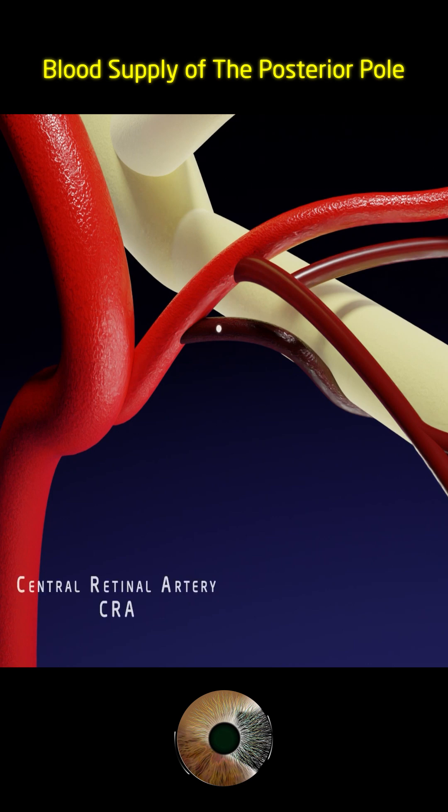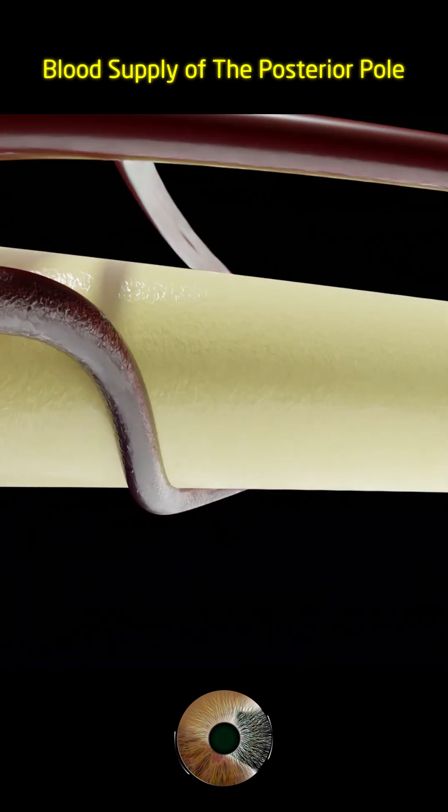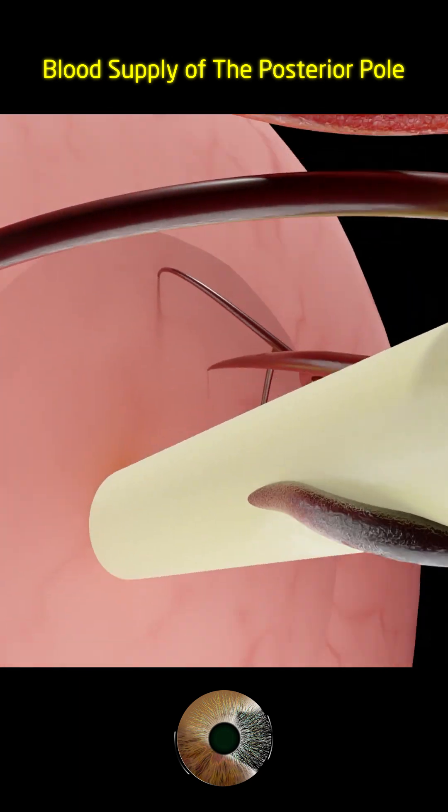The central retinal artery (CRA) is the first ocular branch of the ophthalmic artery. It arises just after the ophthalmic artery enters the orbital cavity through the optic canal, inferior and lateral to the optic nerve. From its origin, the CRA runs forward and medially, then ascends to approach the inferior surface of the optic nerve.